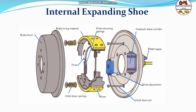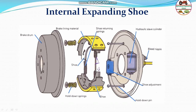Coming to the internal expanding brake: the brake drum has shoes arranged inside with brake lining material on the shoes. There are hold-down springs, a slave cylinder or wheel cylinder to displace the shoes so that they expand and engage with the brake drum, hold-down pins to hold the brake assembly together, and bleed nipples to allow excess hydraulic fluid to exit from the slave cylinder.